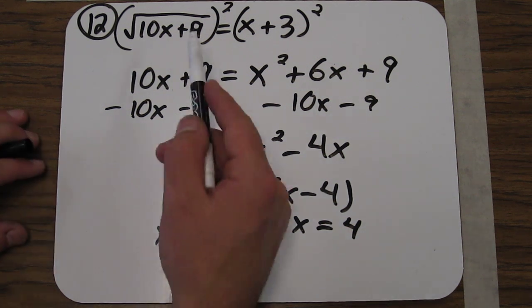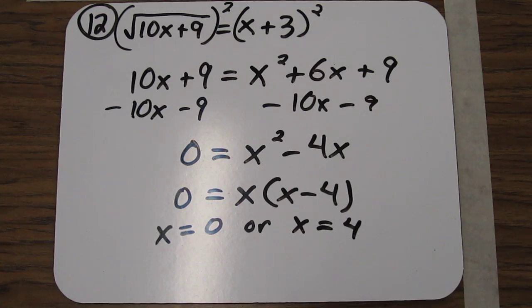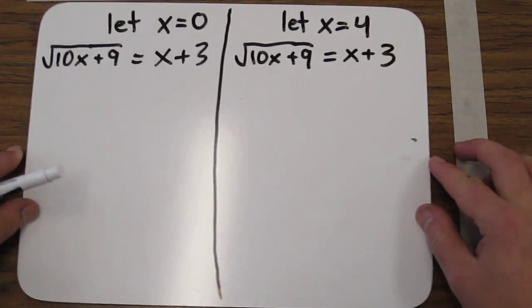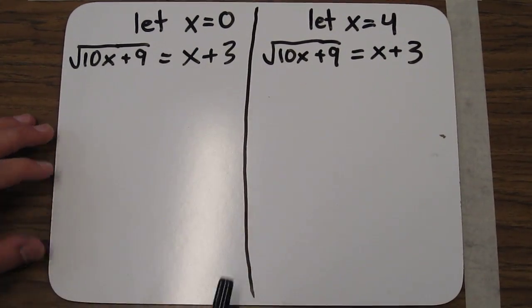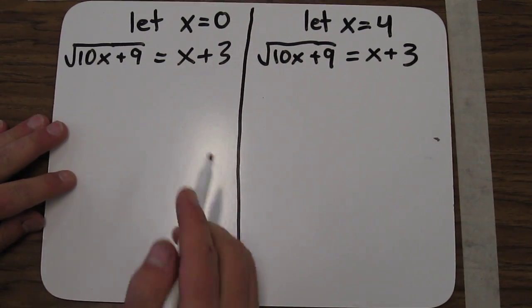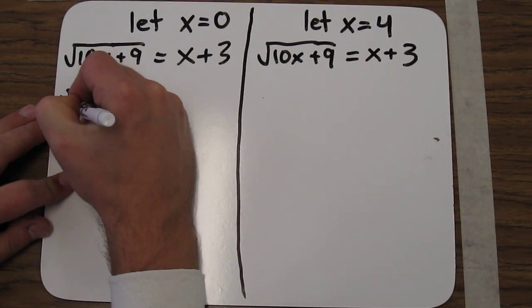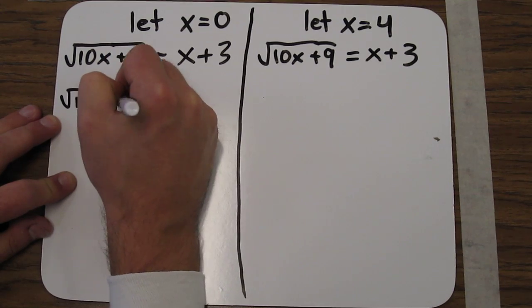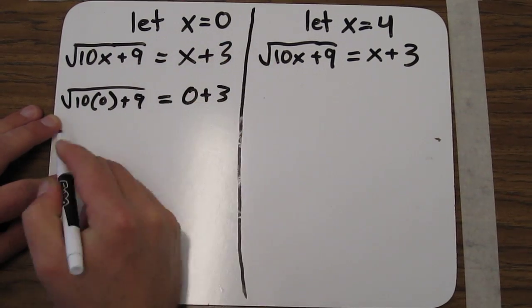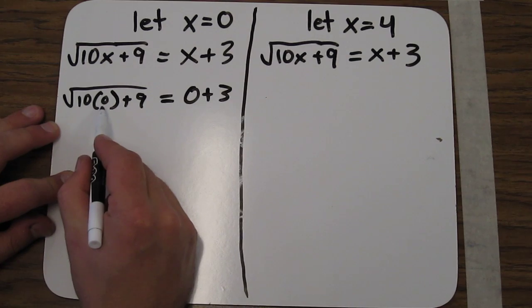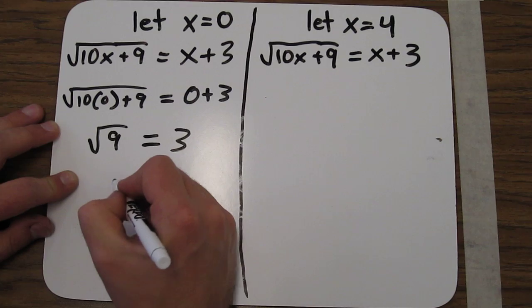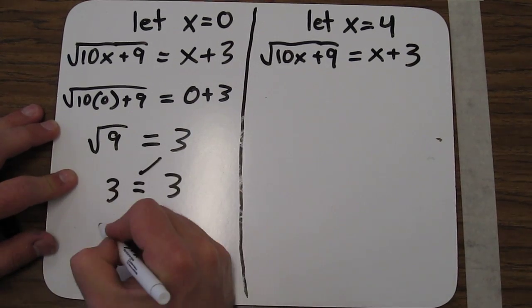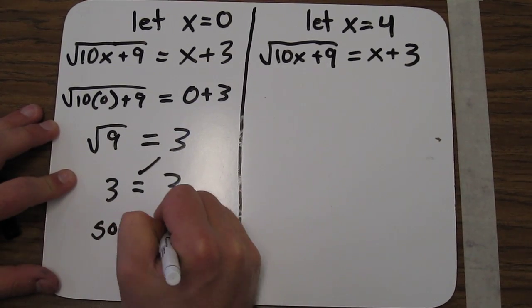Any time you raise both sides of an equation to an exponent, you're going to need to check for extraneous solutions. So here's how we check. Let's see if x equals 0 makes our original equation true. So I plug in 0 where the x's are. I get 10 times 0 is 0 plus 9. So I get the square root of 9 and does that equal 3. And yes, 3 equals 3. So x does equal 0.